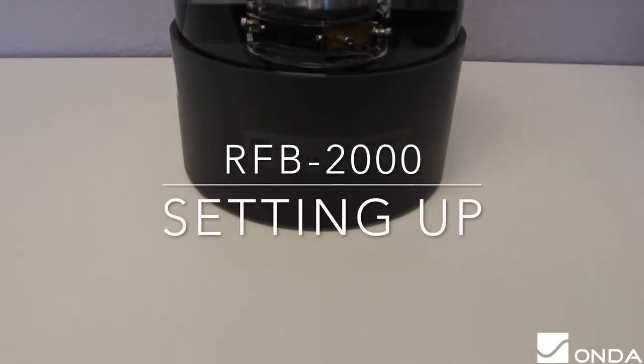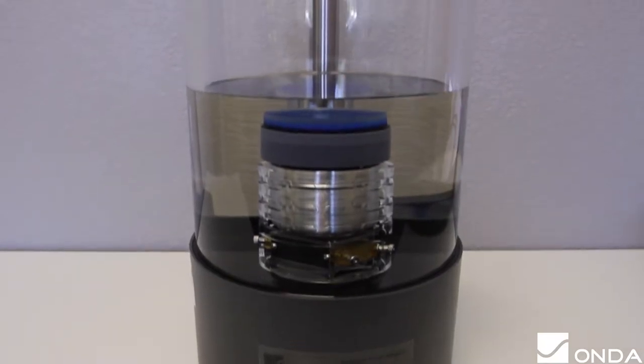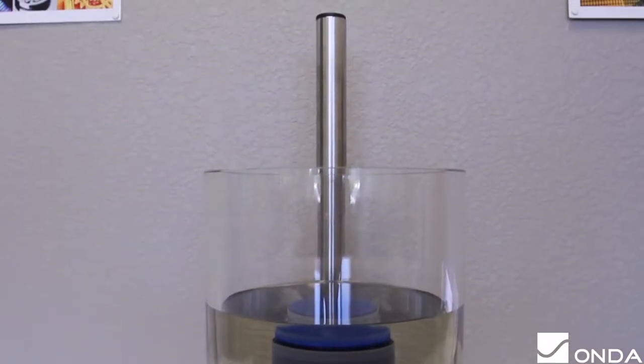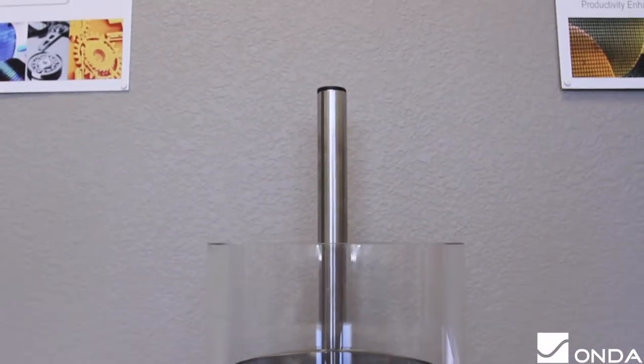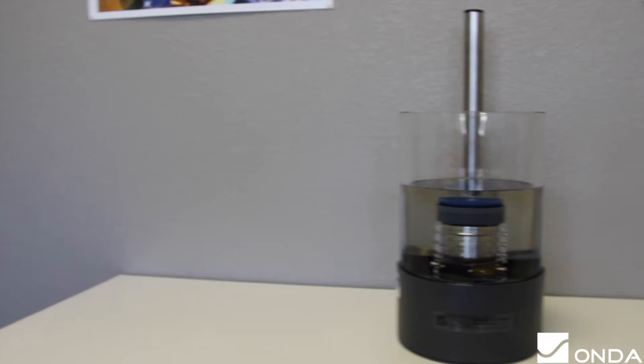The ONDA RFB-2000 is designed specifically for the measurement of ultrasound power and easily handles a wide range of diagnostic, physiotherapy, high-food ultrasound products, and laboratory devices without requiring extensive need for correction factors.